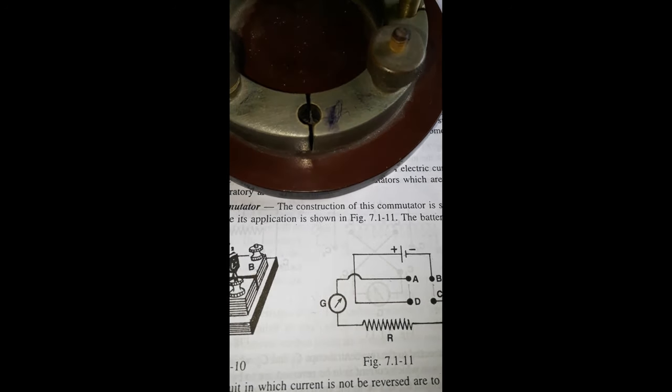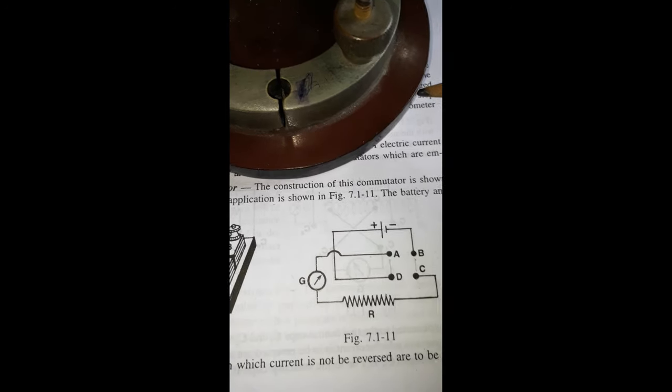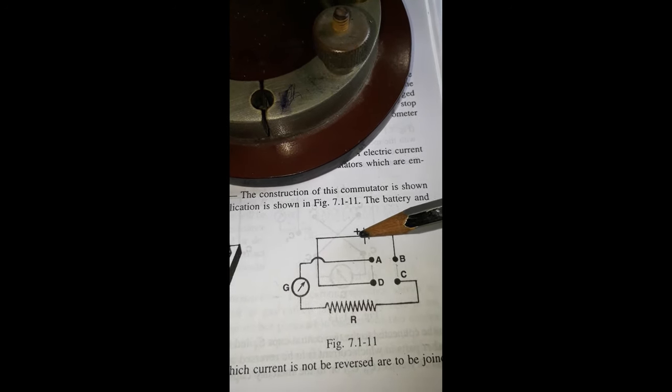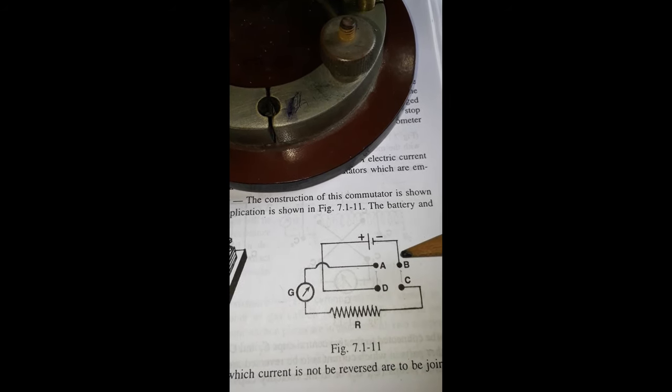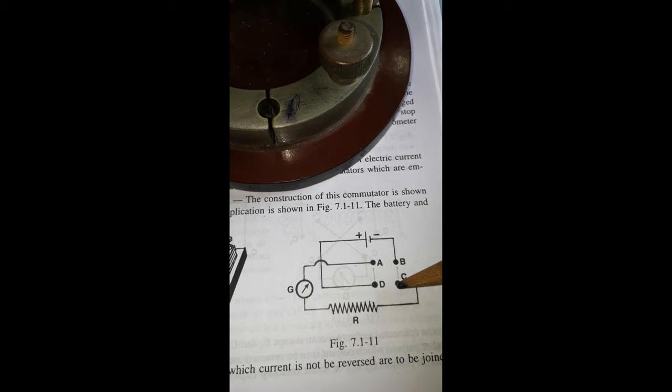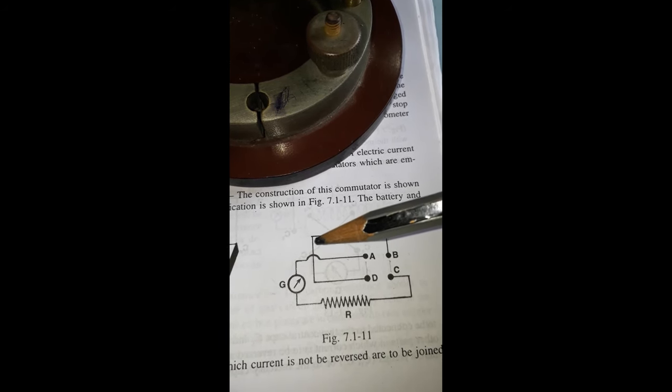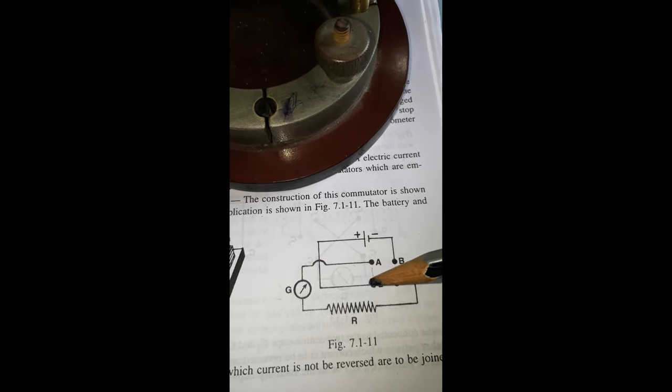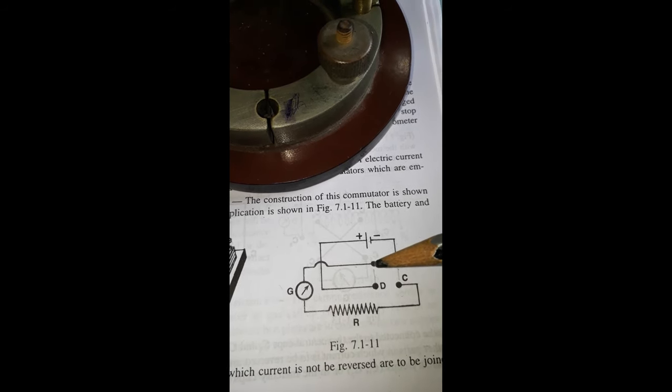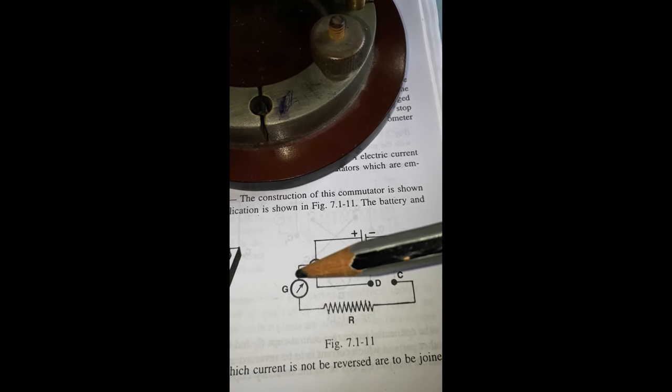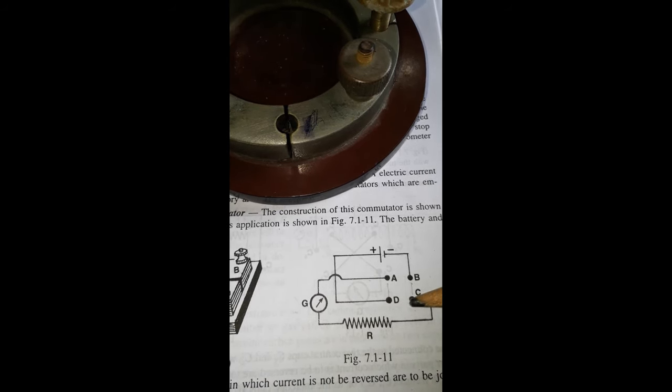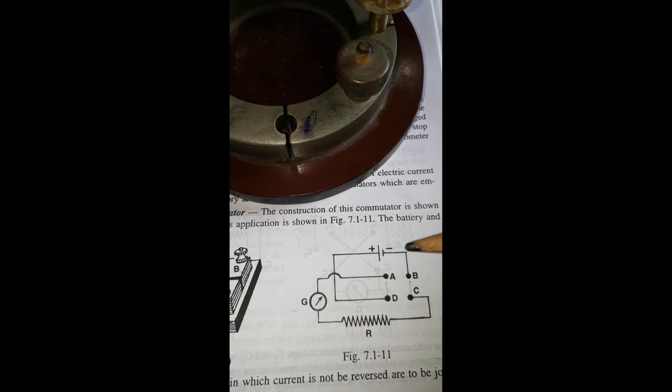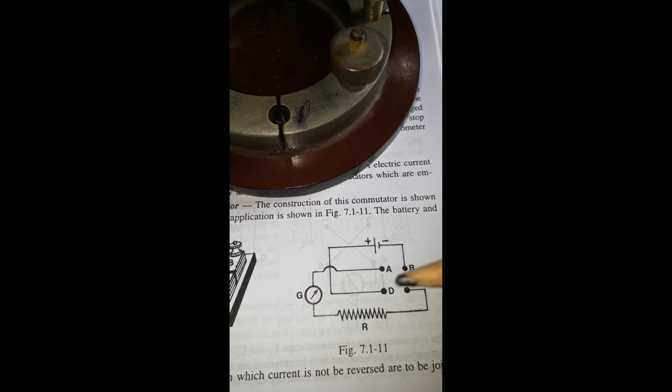The equivalent circuit is shown in this fashion. The key is between A and D and between B and C. Current flows from the positive terminal, going from D to A, then through the galvanometer from upper side to lower side, then through the resistance, then to C and B, and to the negative terminal. When the key is changed position to between A and B and C and D...